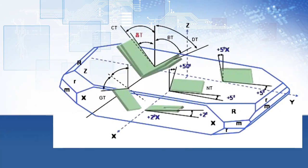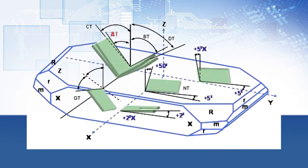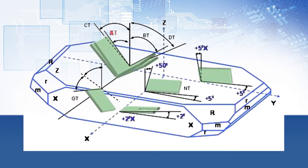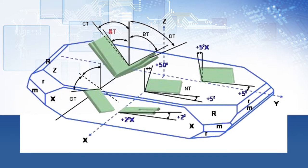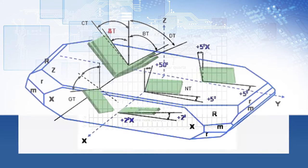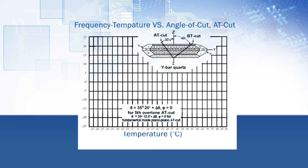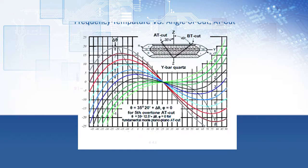By cutting the quartz at different angles, you can optimize the quartz blank to perform better in a specific application. For some of today's most stringent applications that require high stability and wide temperature ranges, we would use an AT cut crystal blank.